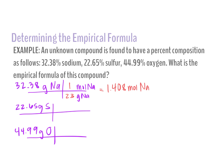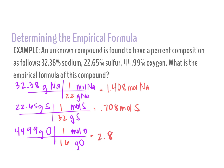My next conversion is sulfur. Grams of sulfur to moles of sulfur — molar mass is 32. So 22.65 divided by 32 gives me 0.708 moles of sulfur. Then I convert oxygen to moles — molar mass is 16. So 44.99 divided by 16 gives me 2.812 moles of oxygen.